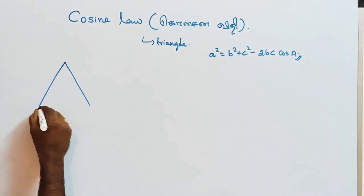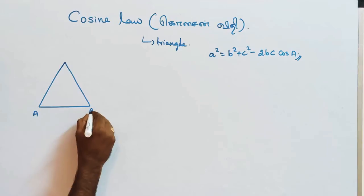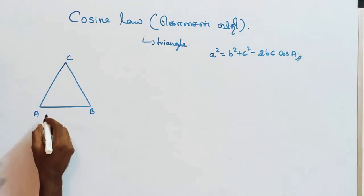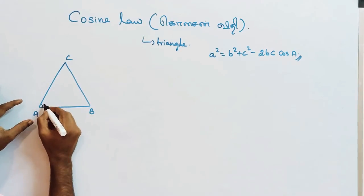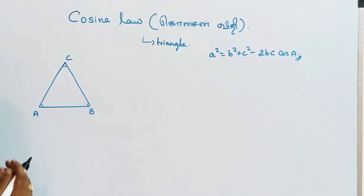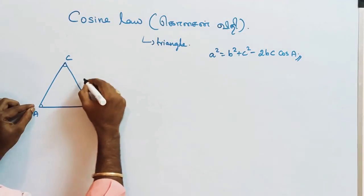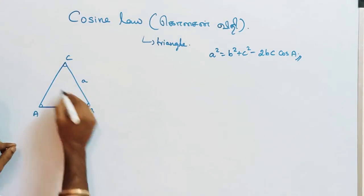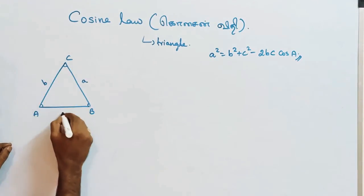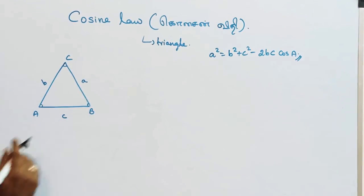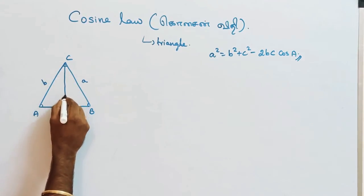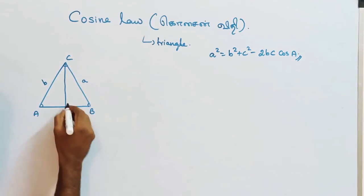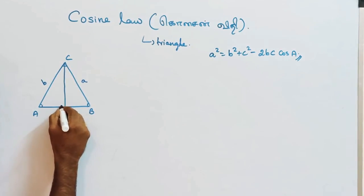Consider a triangle with vertices A, B, and C. The angles are angle A, angle B, and angle C. The side opposite to angle A has length a, the side opposite to B has length b, and the side opposite to C has length c. We drop a perpendicular from vertex C to side AB, forming two right-angle triangles. This perpendicular meets AB at point D, making a 90° angle.